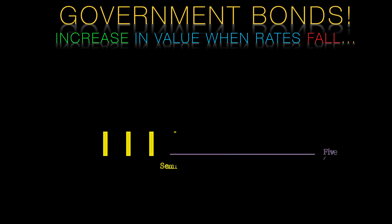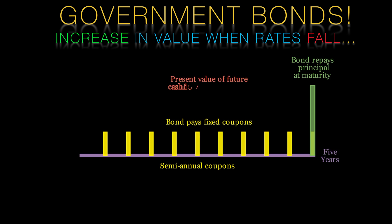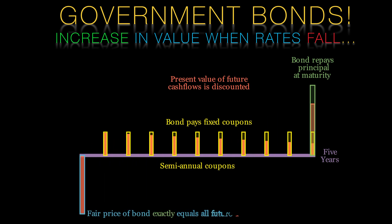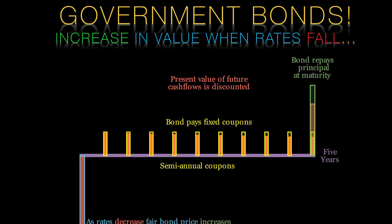Government bonds pay a series of interest payments called coupons based on their interest rate and return their final value at maturity. The coupons are shown as yellow bars on this diagram and the final value is shown in green. Given the current interest rates, we can calculate the present value of these future cash flows, which are shown in red. We can sum all these up to generate the fair price of the government bond. As rates increase, the fair value decreases — this stands to reason, if interest rates are higher, you need less money invested now to meet the obligation in the future. Conversely, if rates fall, the price of the bond will increase. This means that government bonds are a great hedge for the interest rate exposure in our pension scheme.